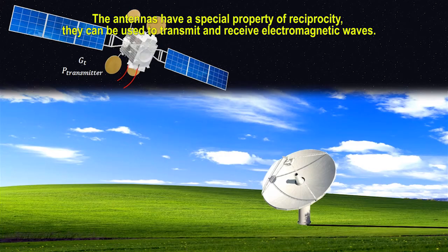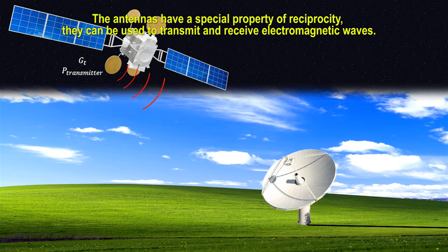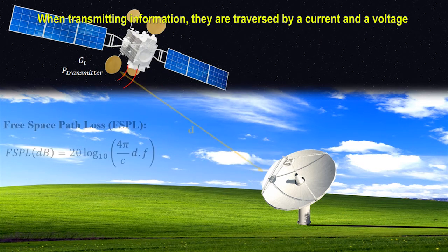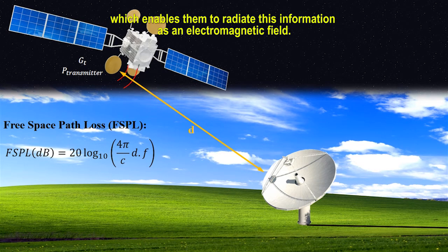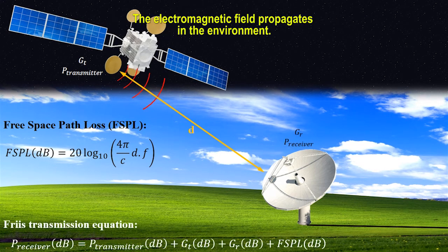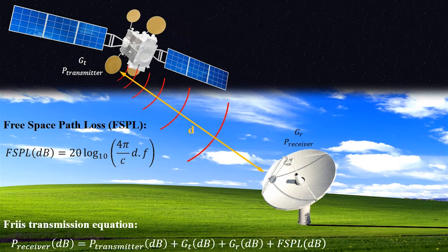The antennas have a special property of reciprocity — they can be used to both transmit and receive electromagnetic waves. When transmitting information, they are traversed by a current and a voltage which enables them to radiate this information as an electromagnetic field. It propagates in the environment.